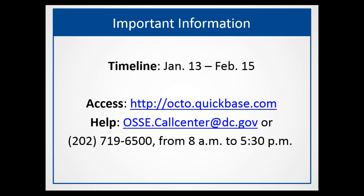The important information to know up front is the timeline. January 13th, which is this Friday, the profiles will open in the QuickBase application and stay open through February 15th — 5 p.m. that day is the deadline. You can contact our help desk by email or phone for questions specifically about completing the profile in QuickBase, getting access for more people, or any system issues. They're open between 8 and 5:30. The email you've been receiving from OSSE School Help at DC.gov is also a good resource for higher-level questions about deadlines or the profile more generally.